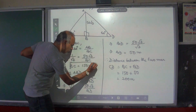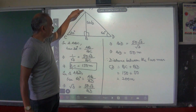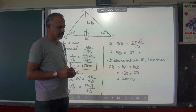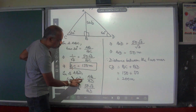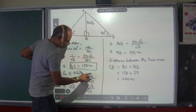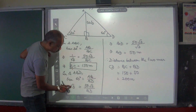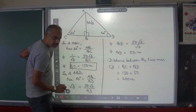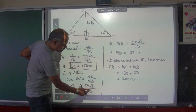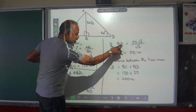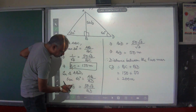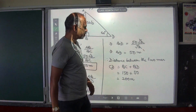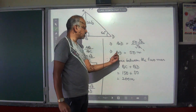Length BC is 150 meters. Now let us use the second triangle, triangle ABD, which has 60 degrees in it. Tan 60 is equal to perpendicular AB by base BD. Tan 60's value is root 3, which equals 50 root 3 divided by BD. Bring BD to this side and take root 3 to the denominator. So BD is equal to 50 root 3 divided by root 3. The root 3 and root 3 get cancelled, so you are left with 50. BD's length is 50 meters.